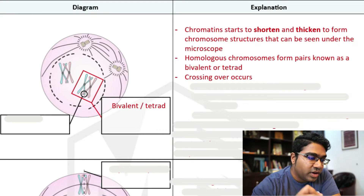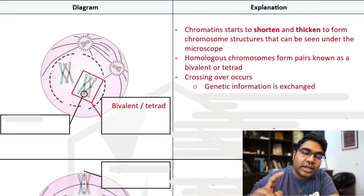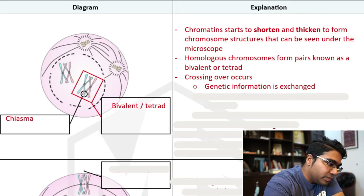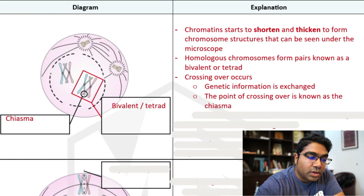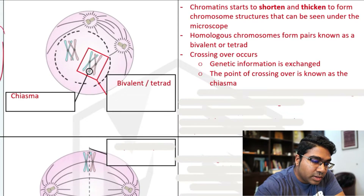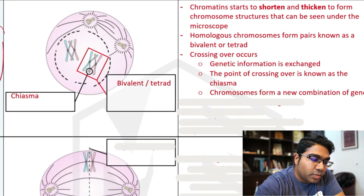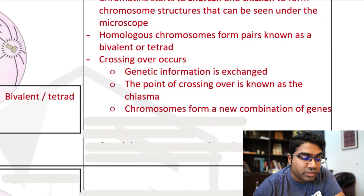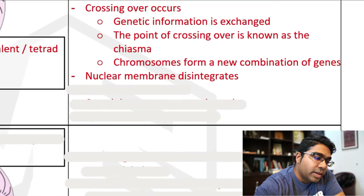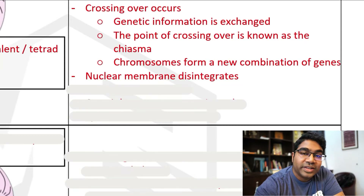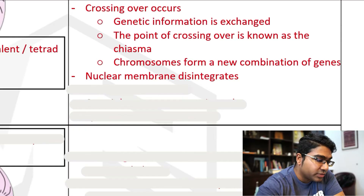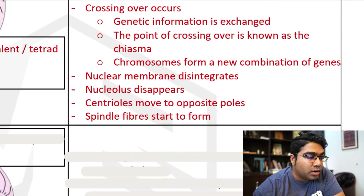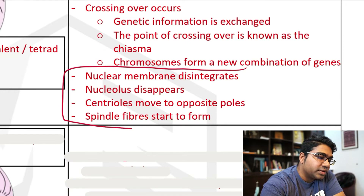Crossing over doesn't happen in any other stage. What happens during crossing over is that genetic information is exchanged. The point where they cross is known as the chiasma, and part of the gene is exchanged, so chromosomes form a new combination of genes. This is very important in genetic variation. The rest that happens also occurs in prophase: the nuclear membrane disintegrates, nucleolus disappears, centrioles move to the opposite poles, and spindle fibers start to form.